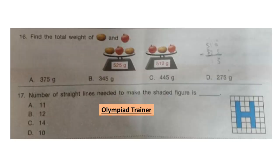Question 16: Find the total weight of potato and onion. Two weighing scales are given: the first has 2 potatoes and 1 onion, the other has 2 onions and 1 potato. Add both scales to get 3 potatoes + 3 onions. Adding both weights: 525 + 510 = 1035 grams. Dividing by 3 gives the weight of 1 potato and 1 onion, which is option B: 345 grams.